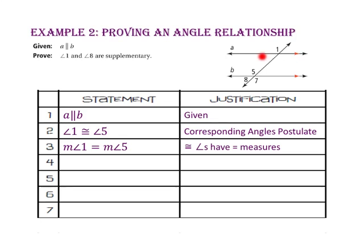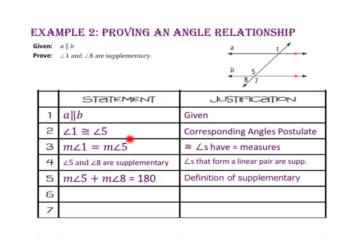In step 4, angle 5 and angle 8 are supplementary because angles that form a linear pair are supplementary. In step 5, the measure of angle 5 plus the measure of angle 8 equals 180, by the definition of supplementary. Since the measure of angle 1 equals the measure of angle 5, we can substitute angle 1's measure into this equation, giving us the measure of angle 1 plus the measure of angle 8 equals 180. Therefore, angle 1 and angle 8 are supplementary by the definition of supplementary.